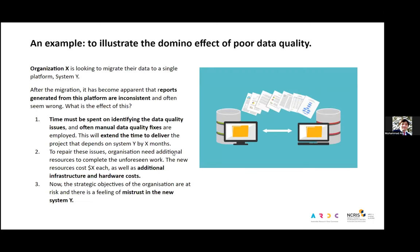To support these statements, here is an example of how data quality affects data architecture. If an organization is trying to migrate their data from one platform to another, after migration they realized the migration produced inconsistent results — these were actually from data quality issues that were ignored at the first step. What went wrong is that during migration, time should have been spent identifying data quality issues. There are also a lot of manual processes to fix data quality issues, which leads to extended delivery timelines.